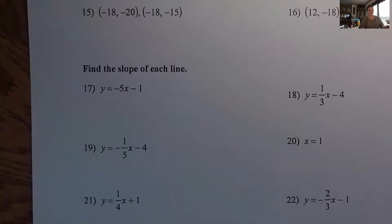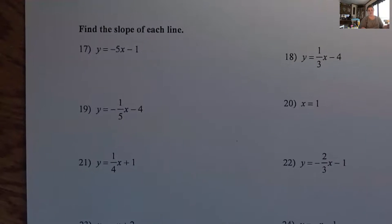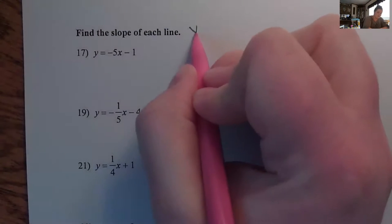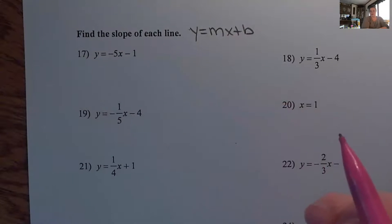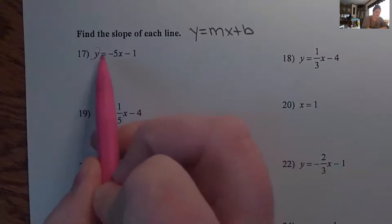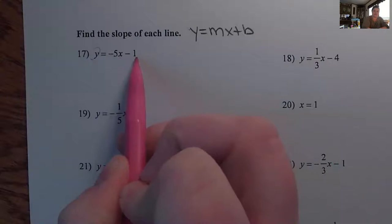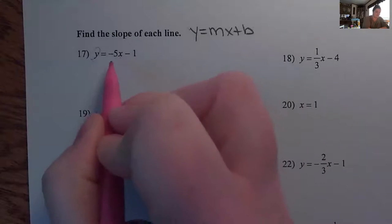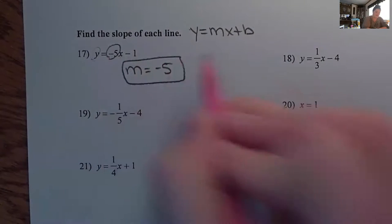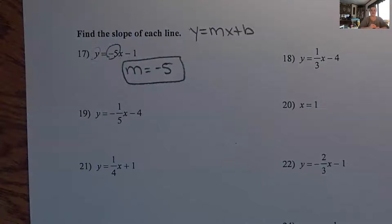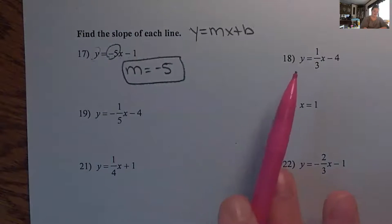Now we have the equation. If we're trying to find the slope of a line from an equation, we want it in our favorite form: y equals mx plus b. Y has to be by itself, and then M is the number in front of the X. On number 17, Y is already by itself, so we have y equals mx plus b. What's in front of the X? Negative 5. So M is negative 5. Remember, M is in front of the X when you have Y by itself.